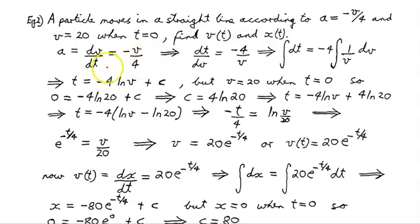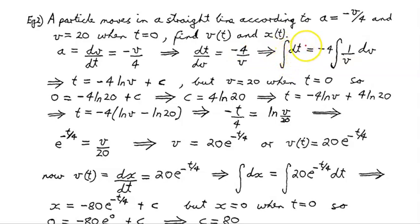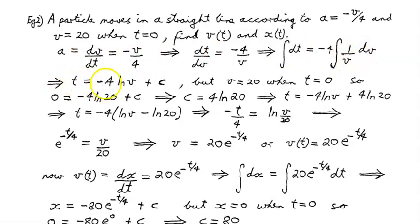If we flip this, we'll be able to put the v's on one side. So dv/dt equals minus v on 4, but dt/dv equals minus 4 on v. The integral of dt/dv integrated with respect to v, and on the right we integrate with respect to v as well: minus 4 times the integral of 1 on v dv. The antiderivative of 1/v is the natural log of v, so we end up with t equals minus 4 times the natural log of v plus our constant.